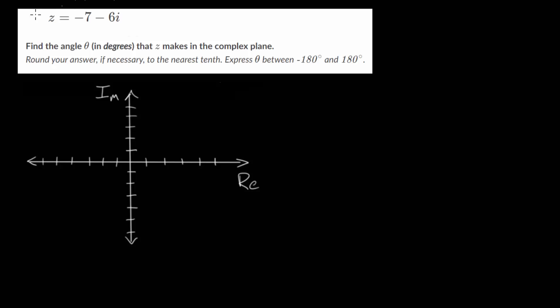So let's start by plotting this number on the complex plane. It has a real part of negative 7, so I actually need one more tick mark here, and it has an imaginary part of minus 6i, which would be down here.